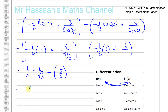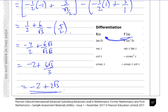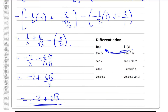6 over √3 should be rationalized — we can't leave a surd in the denominator. Rationalizing gives 6√3 over 3, which simplifies to 2√3. So the final answer is minus 2 plus 2√3, written in simplified rationalized form. That completes both parts of integration question number four.